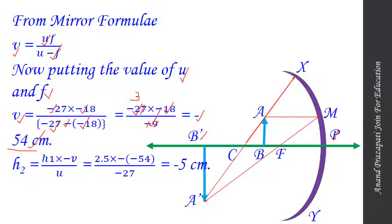According to the magnification formula, the height of the image A'B' equals the height of the object multiplied by minus V divided by U. Putting the value of H1 as 2.5, V as minus 54, and U as minus 27, after calculation we get the value of H2 as minus 5 cm. So the height of the image is minus 5 cm.